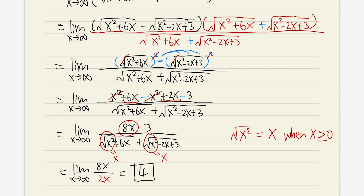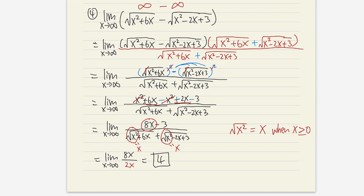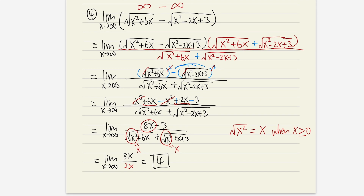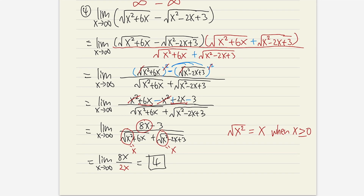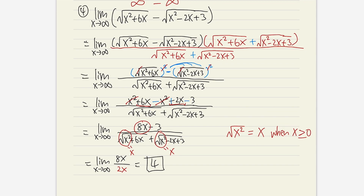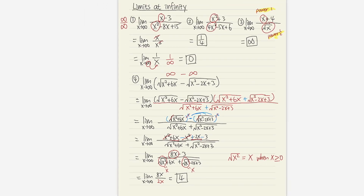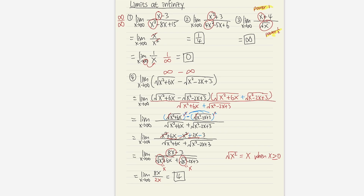As you can see, infinity minus infinity gives us 4 as the answer for this one. Of course, you can have different answers as well. Infinity minus infinity is not always equal to 0 — it could be, but we don't know until we do more work. That's it for this lesson.